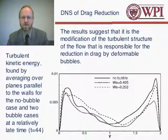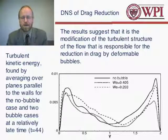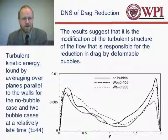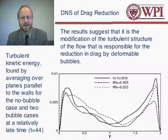In addition to helping explain what is going on, the detailed data obtainable from the simulation can also provide data for turbulence quantities. Obviously, if we are going to model these flows, we have to find a way to incorporate the mechanisms we have elucidated into turbulence models. The first step is to gather various turbulence data and see how the presence of the bubbles affects it. In this particular slide, I plotted the turbulent kinetic energy averaged over planes parallel to the wall. On one wall we don't see too much difference where we added the bubbles, but on the other wall the turbulent kinetic energy has been reduced relatively substantially.